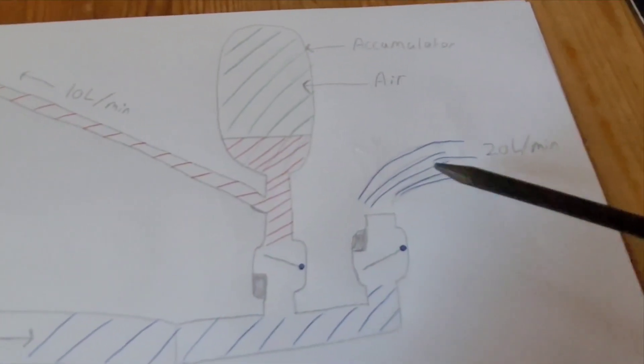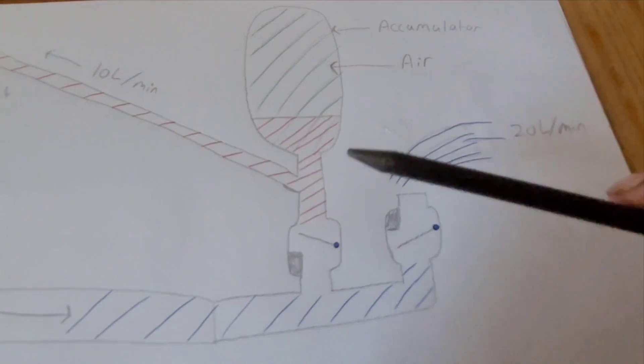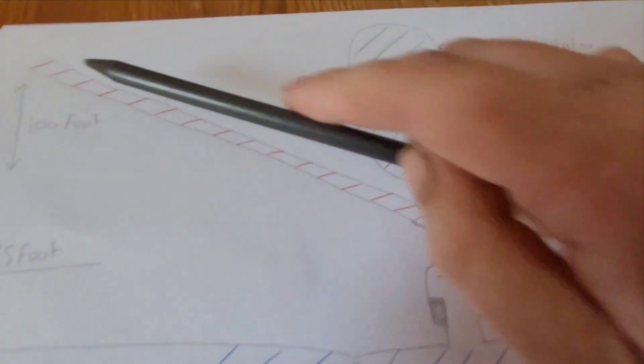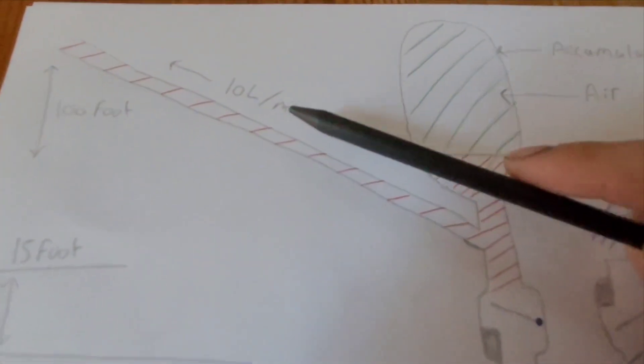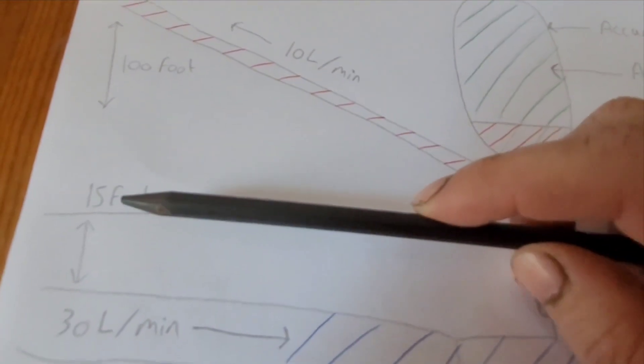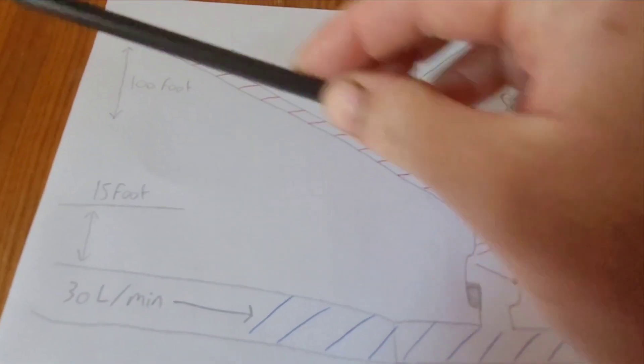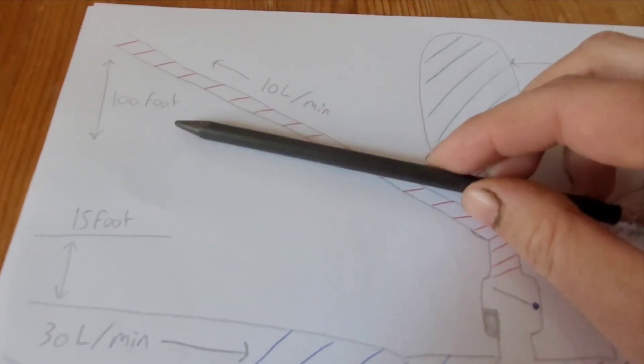So you've got 20 litres here flowing flat out, bang, goes up here, and you've got 10 litres here, so you've got 4 to 1, and you're pumping 10 litres up. So you've got 15 foot drop here and a long span of a pipe, and you can actually pump it vertically up 100 foot.